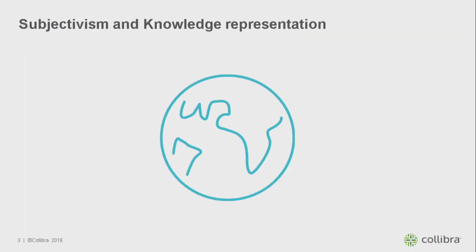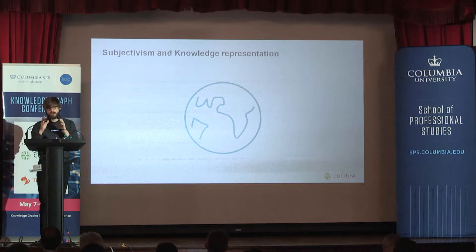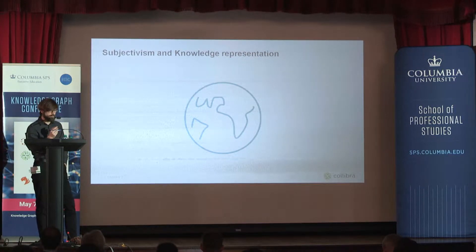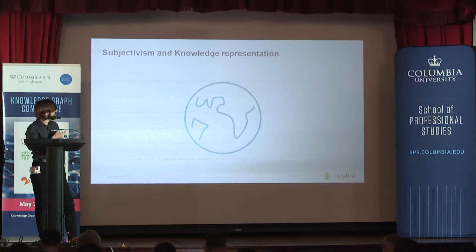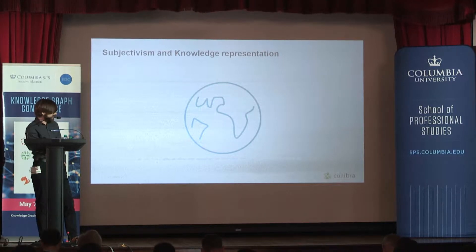I want to use this to segue into a cognitive science view on everything I'm going to be talking about. I start out with a subjectivist view on the world. That means that all our experience, all our knowledge, is subjective. We can say there is no such thing as objective truth out there.